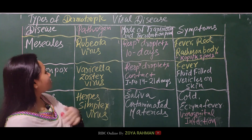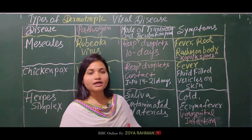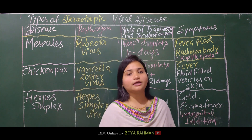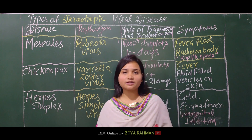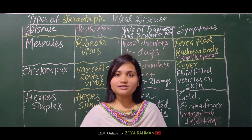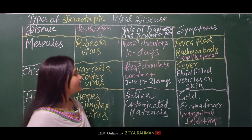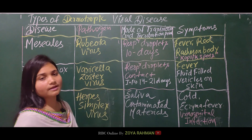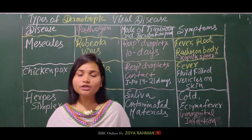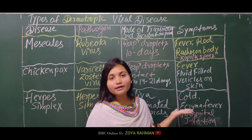Chicken pox is caused by the varicella-zoster virus. Chicken pox is slightly more dangerous than measles because it causes vesicles on the skin — blisters filled with water. In measles, by contrast, there is only dark red discoloration. The next dermotropic disease is herpes simplex virus, which causes problems in the urogenital tract where urine passes. Symptoms include fever and coldness.